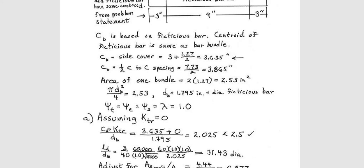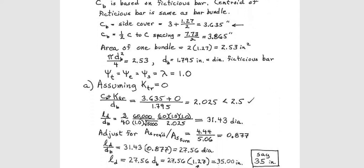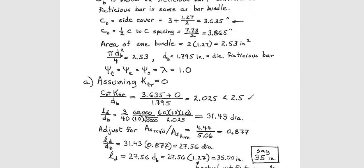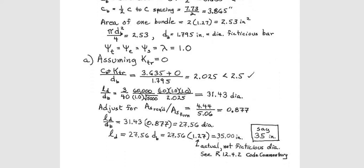First they assume KTr 0. CB you saw how we got it. KTr 0 divided by this 2.025. It is less than 2.5. So good. Now they use the equation LD by dB. Yes, sometimes I write dB here. That is okay. Yes, whatever you do, that is not a problem. It is just a different style.